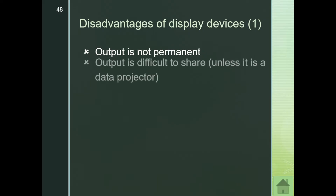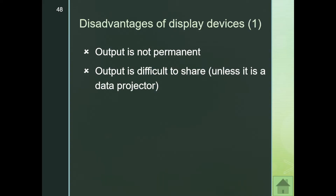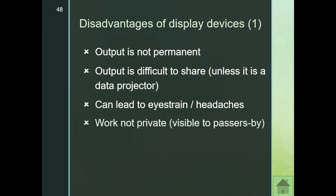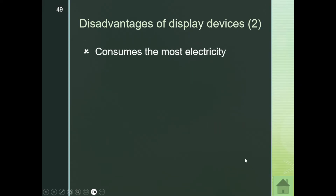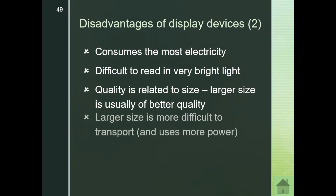Some disadvantages of display devices: output is not permanent because if you change what's on the screen it moves. Output is difficult to share unless you have a massive monitor or data projector. It can lead to eye strain, so you don't want to sit too close to the monitor. Work is not private because people standing behind you can see exactly what's going on. And if you have a very expensive monitor and someone knocks it over, it's quite expensive to replace.